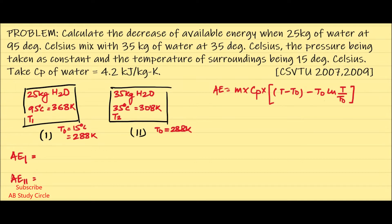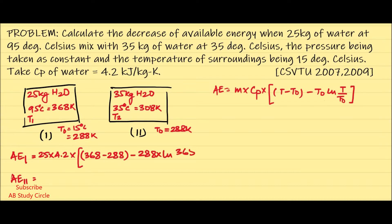For container 1: AE1 = 25 × 4.2 × [(368 − 288) − 288 × ln(368/288)], and this comes out as 987.49 kJ.